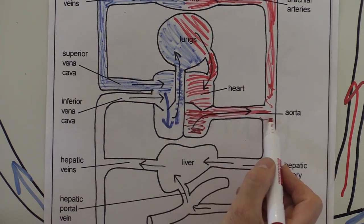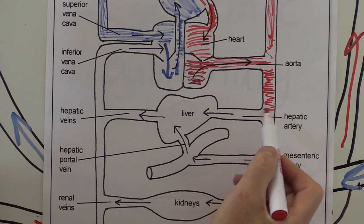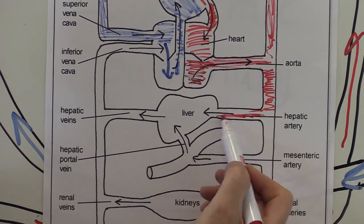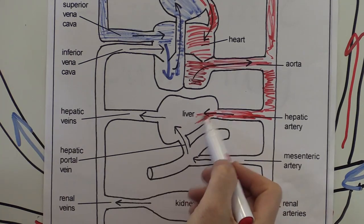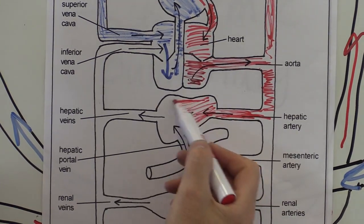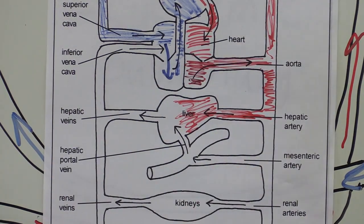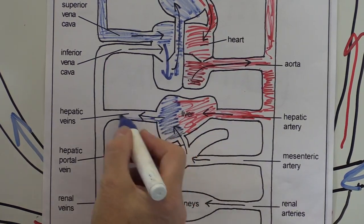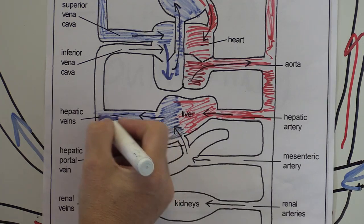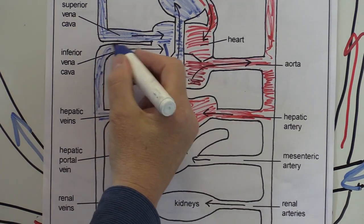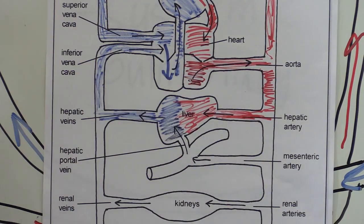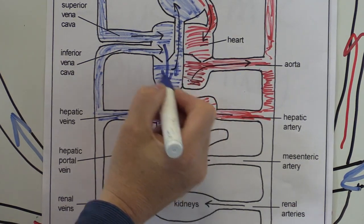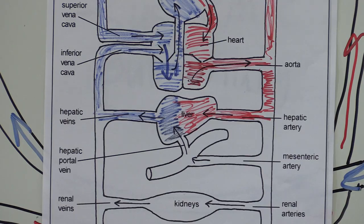Blood also goes down through the body towards the liver, and it's the hepatic artery that's taking blood to the liver. As the blood goes through the liver it will be partly deoxygenated, meaning the hepatic veins are carrying deoxygenated dark red blood back into the inferior vena cava, which drains back into the right atrium, ready to go to the right ventricle to go back to the lungs to be oxygenated.